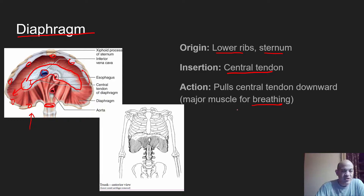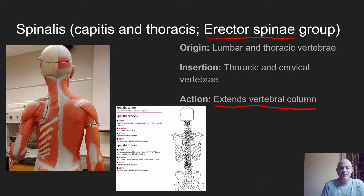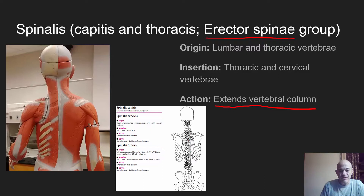Next we'll cover three muscles collectively called the erector spinae, because they help you maintain your vertebral column in an extended position — they help you stand erect. One of the main actions is to extend the vertebral column. The three muscles go from near the spine outward: the spinalis is closest to the spine, the longissimus is the middle group, and the iliocostalis is the most lateral. We have one on the left and right side.